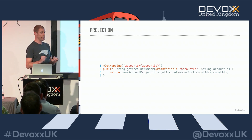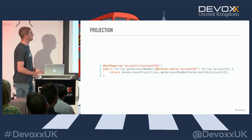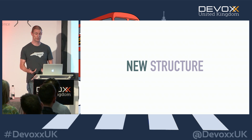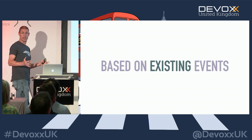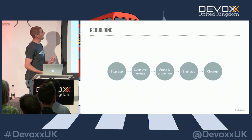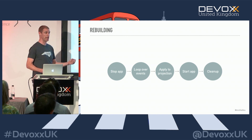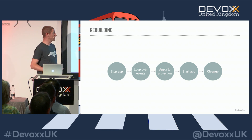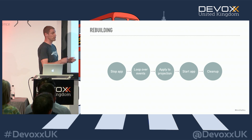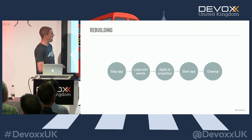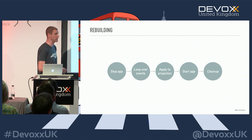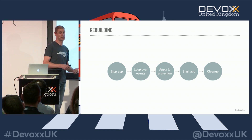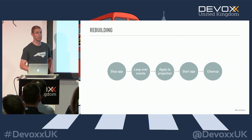Now, let's talk about change again. Assume we need to build a new projection or change an existing projection structure based on existing events. The naive way of rebuilding is to stop the application, loop over all events in the event store, apply them to the new or changed projection, start the application, and do any cleanup. This is naive because it causes downtime, and depending on how many events you have or how intense the calculation is, the rebuild can take from a short while to hours — in some projects I've had rebuilds lasting close to a day.